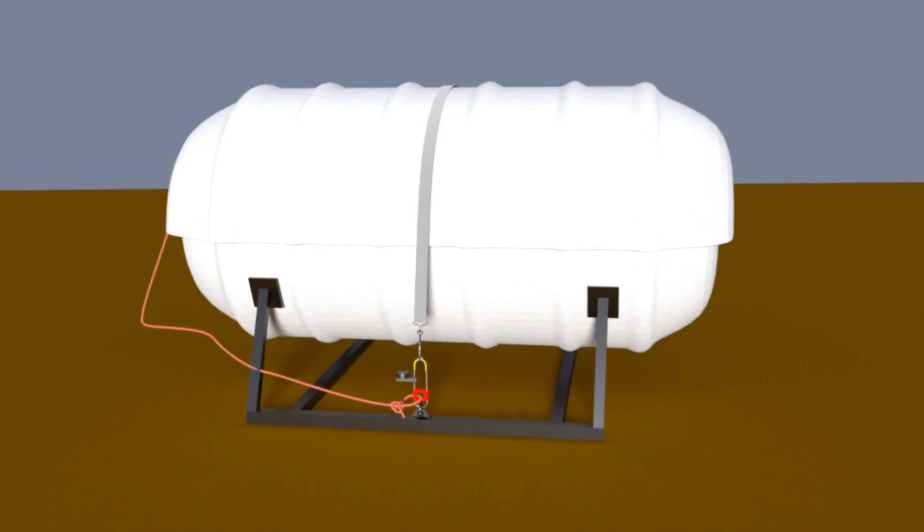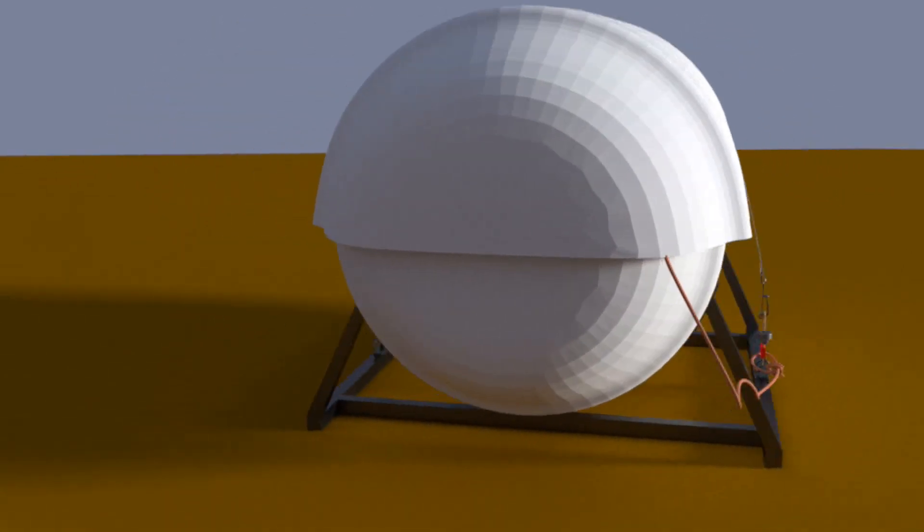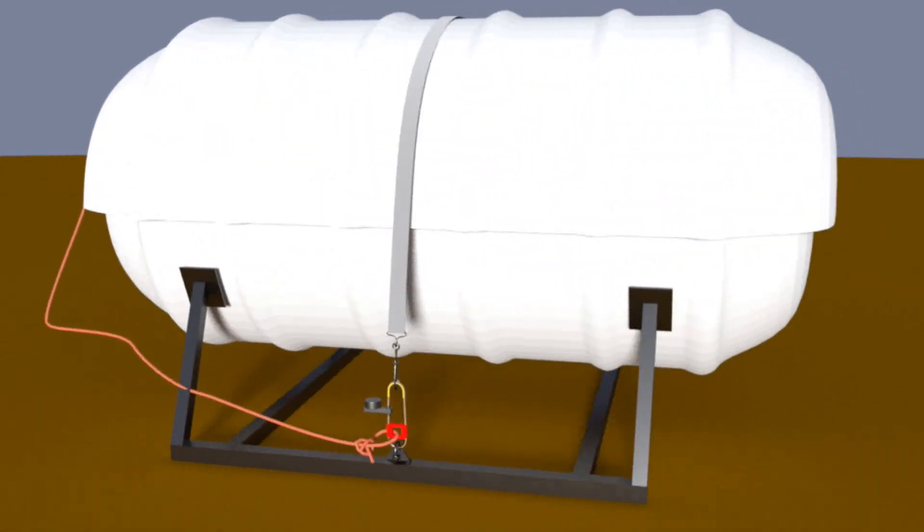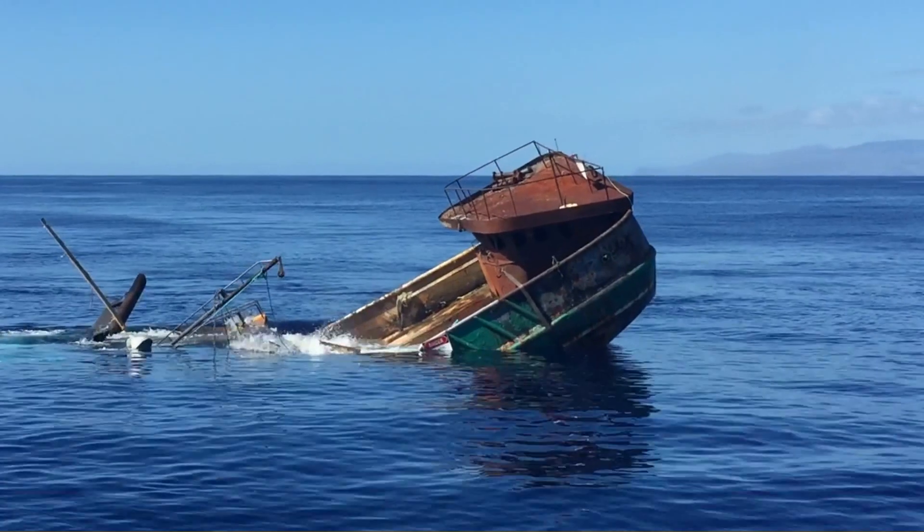Life rafts are stored on open decks so that they can be easily accessed. They need to be secured, but at the same time they need to be free to float should the vessel sink.